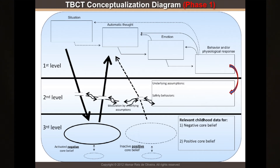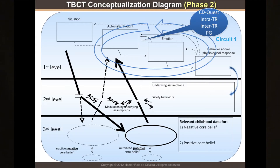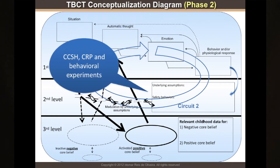What we have is the dysfunctional negative core beliefs becoming more active, or more easily activated. This is phase one, when the disorder is very active or in the beginning of treatment. What we want is to use all the techniques we can to help activate the positive and functional core belief.